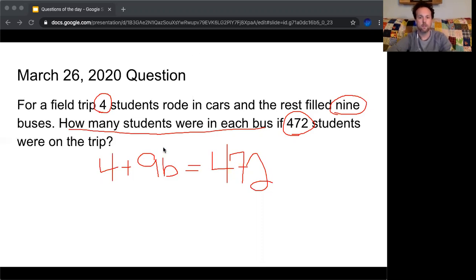I'm going to undo that because that just was horrible. I'm trying to solve for B. So using sad map, I start by subtracting four from each side. Four minus four gives me zero. Nine B. I started out writing this way too large. 472 minus four gives me 468.